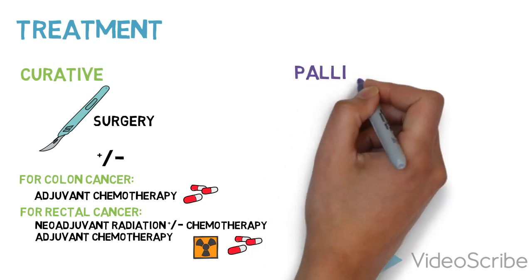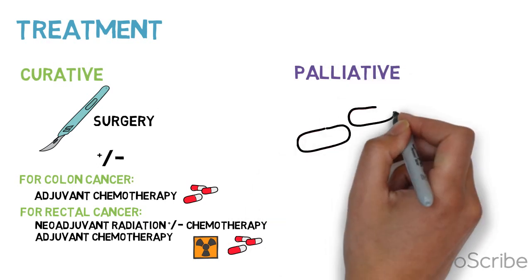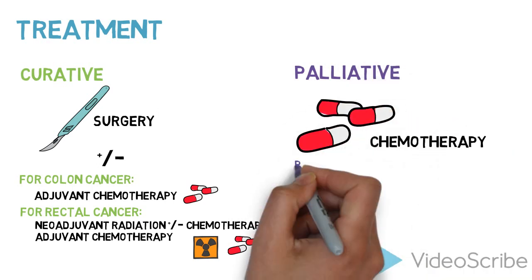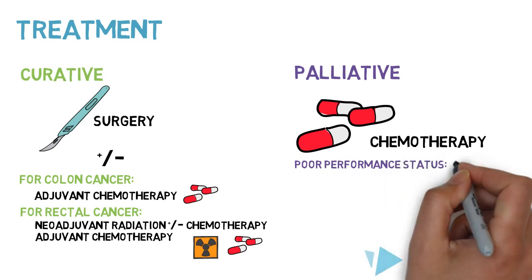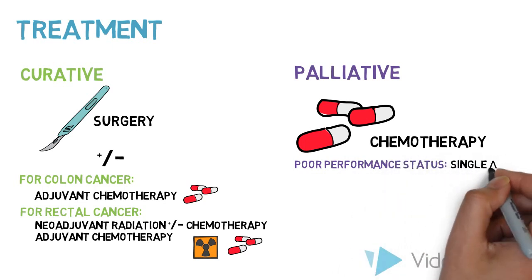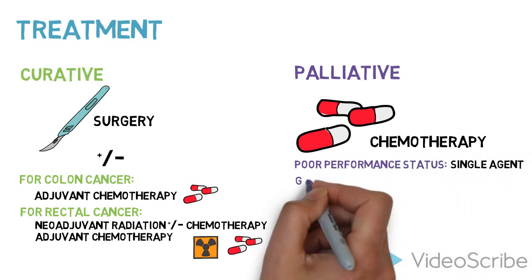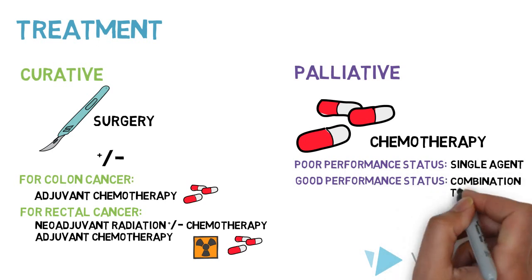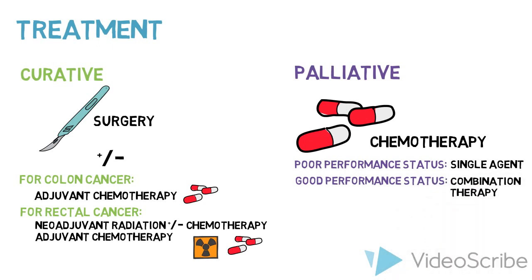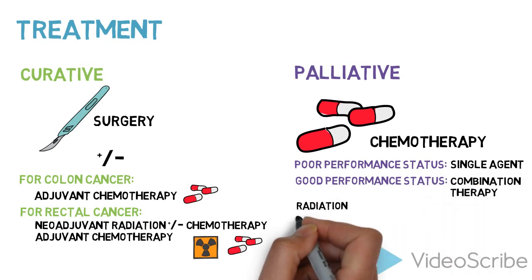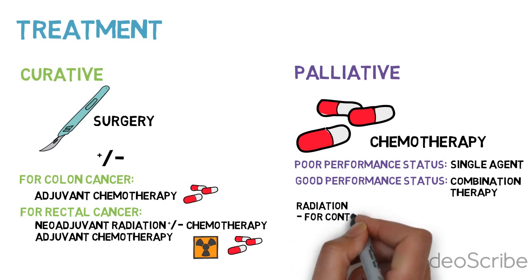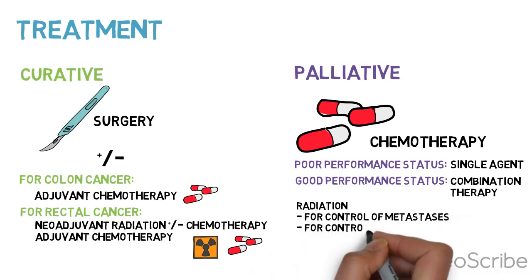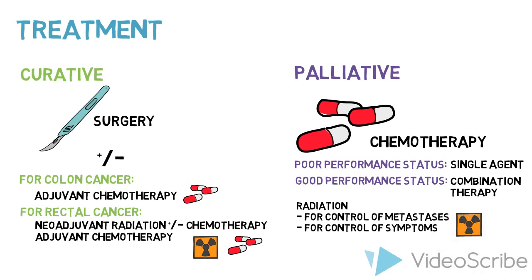If the treatment is for palliative intent, chemotherapy is the mainstay of treatment. Those with poor performance status may do better on a single-agent treatment, while those with good performance status may benefit from combination therapy. Radiation may also be used for control of metastases or control of symptoms such as pain and bleeding.